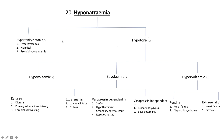That's the first point of departure in our algorithm today. Hypotonic hyponatremia can be associated with extracellular hypovolemia, euvolemia, or hypervolemia. Hypovolemic hyponatremia results from extracellular loss of hypertonic fluid — salt is lost more than water.